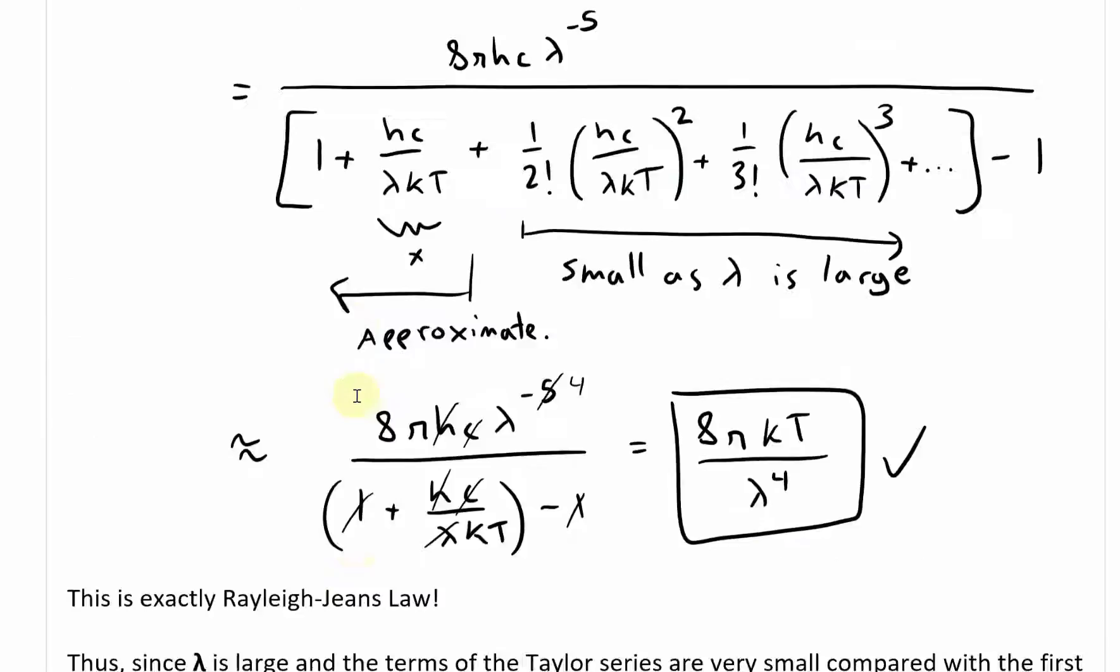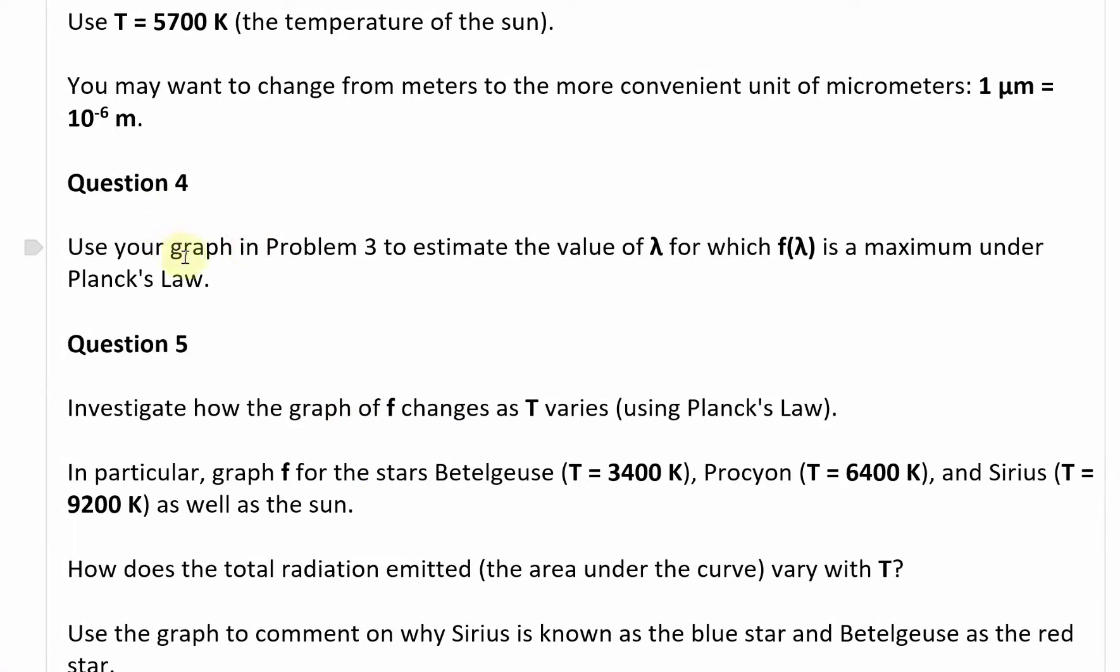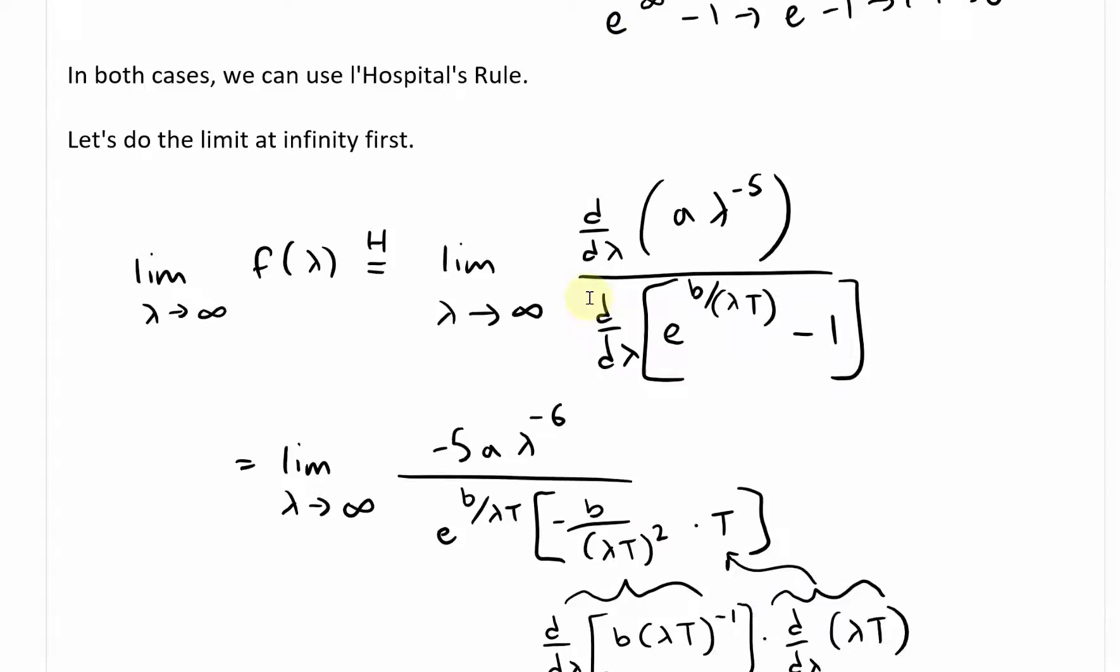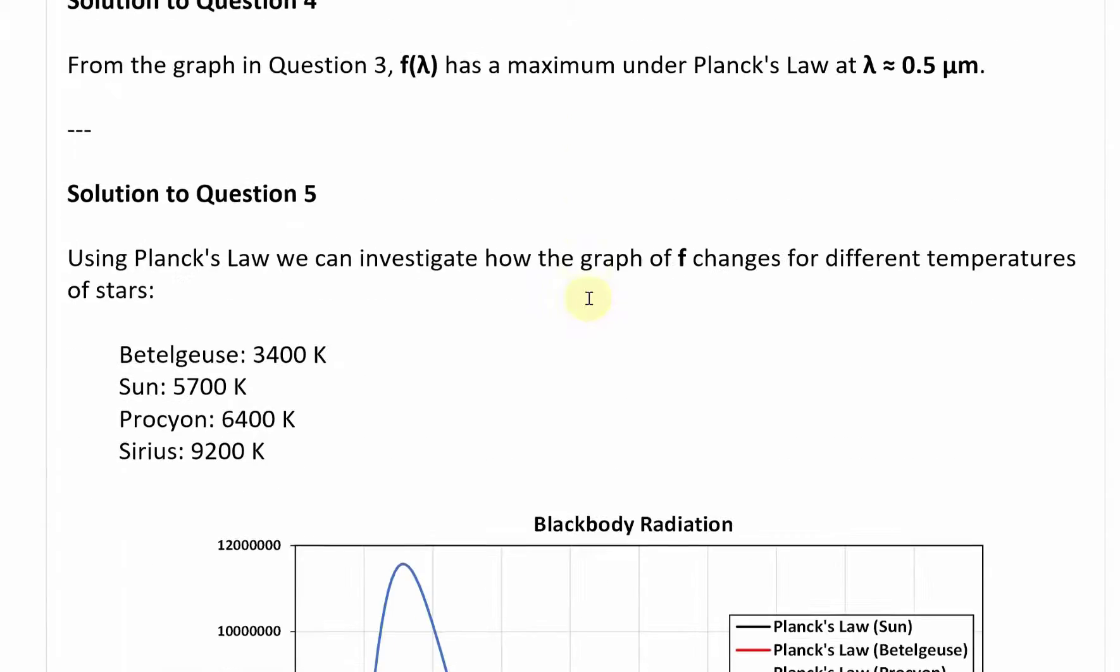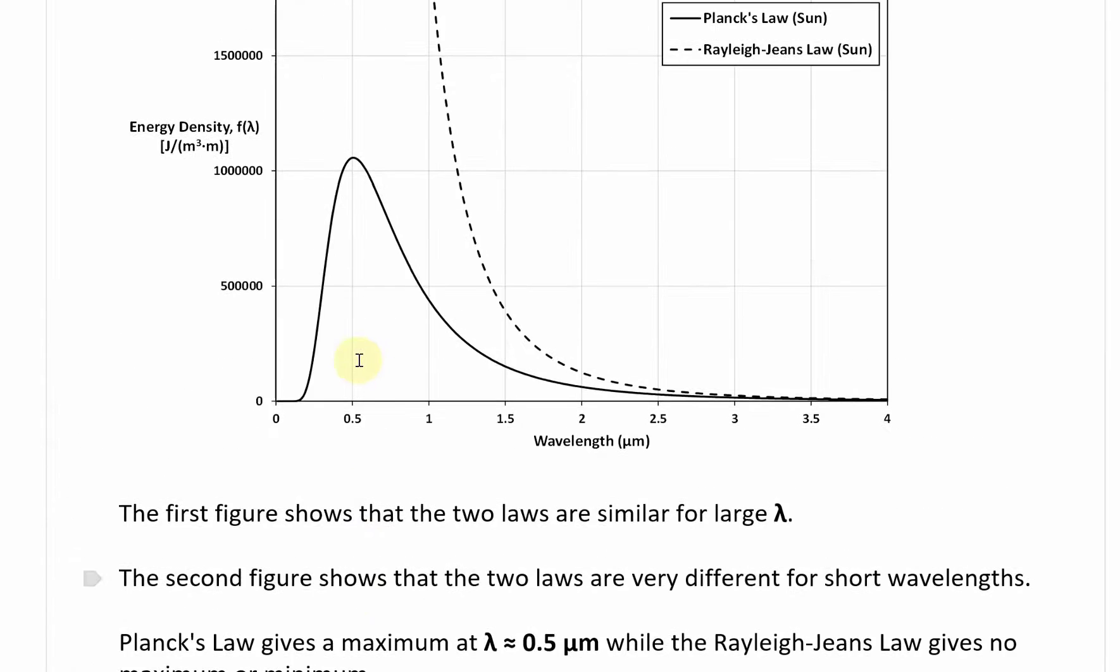That is question 3. Now let's look at question 4. Question 4 says use your graph in problem 3 to estimate the value of lambda for which f of lambda is a maximum under Planck's law. We already did that one, that's just 0.5 micrometers. From the graph in question 3, f of lambda has a maximum under Planck's law at lambda approximately equal to 0.5 micrometers. There's the maximum for Planck's law, straight over at this 0.5 micrometers.